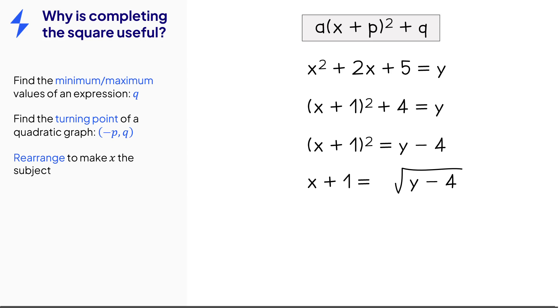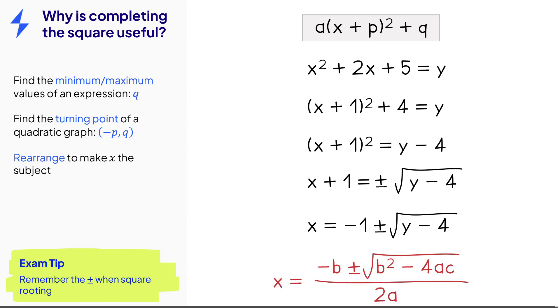When we get to the step where we have to square root both sides remember to include the plus or minus sign. Sometimes in the question there'll be additional information that allows you to ignore one of those signs but if not you have to include both of them and then finally finish it off to get x equals. This same method can be used to derive the quadratic formula. Have a go at this yourself.